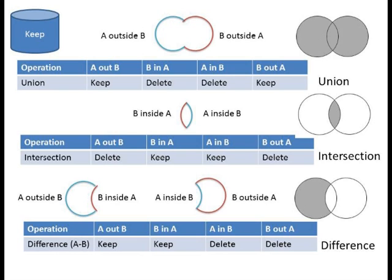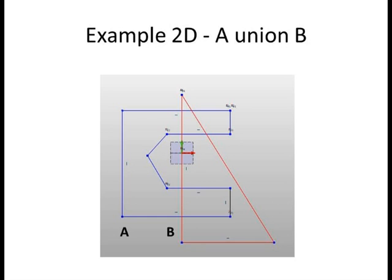So, let's start with a 2D example. Here we have two profile regions, A and B. A is shown in blue and B is shown in red. And we want to compute the 2D boolean operation A union B.